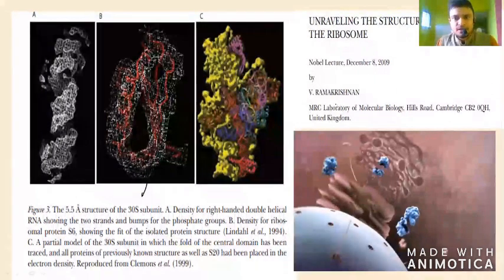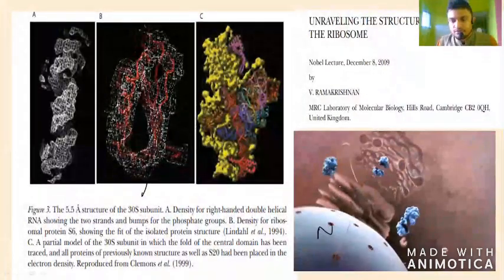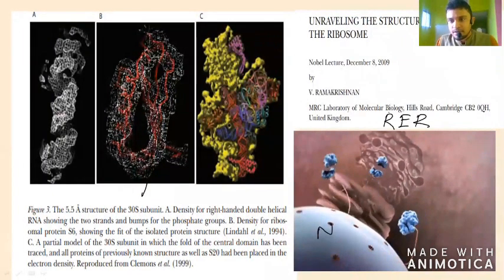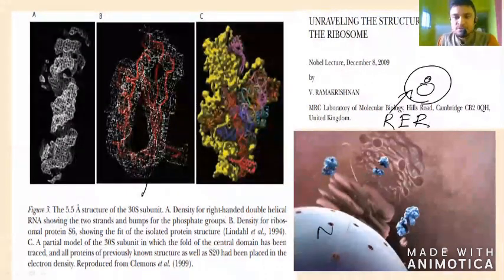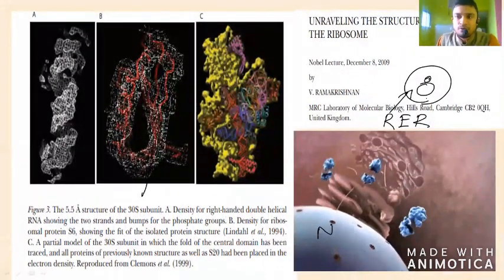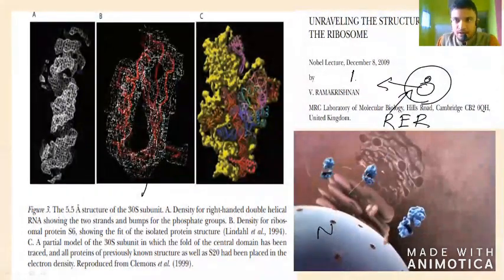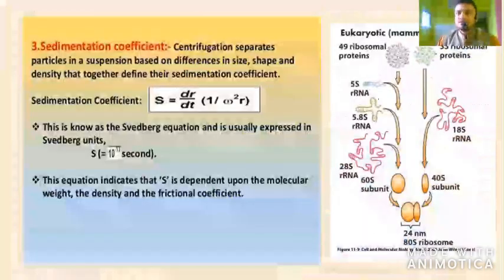You can see in the animation: the nucleus is here, and close to it you have the endoplasmic reticulum. The rough endoplasmic reticulum is connected with ribosomes and helps in protein synthesis. But remember, ribosomes are not only important for protein synthesis — they have another function we shall discuss. They act like enzymes.